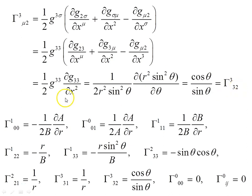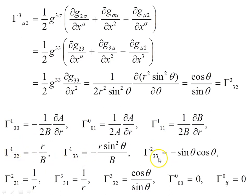Here is the summary of all non-zero Christoffel symbols found: Γ^1_00, Γ^0_01, Γ^1_11, Γ^1_22, Γ^1_33, Γ^2_21, Γ^3_31, Γ^3_32, Γ^2_33 survive. Additionally, Γ^0_00 = 0, and Γ^0_ij = 0 as well.